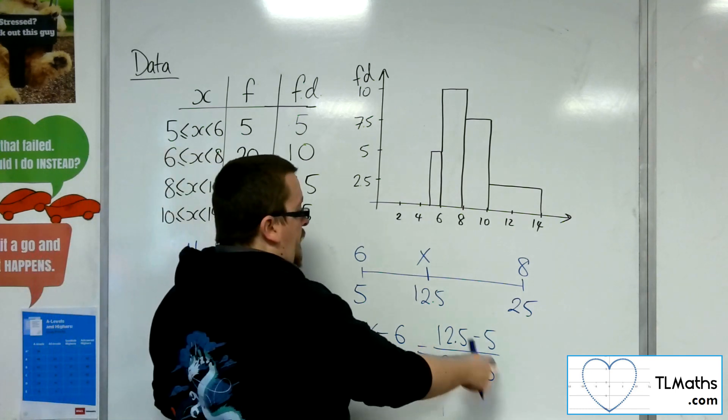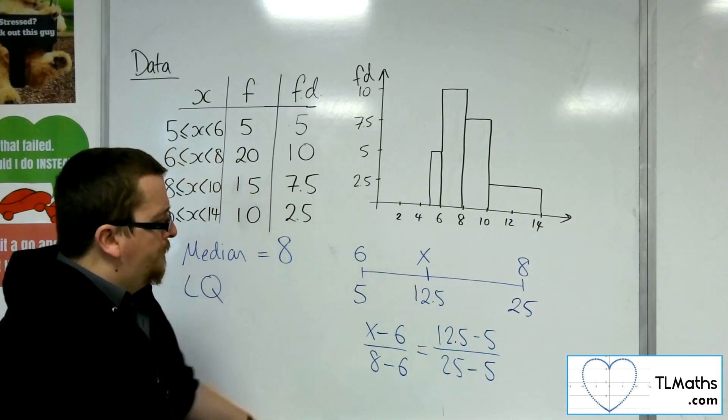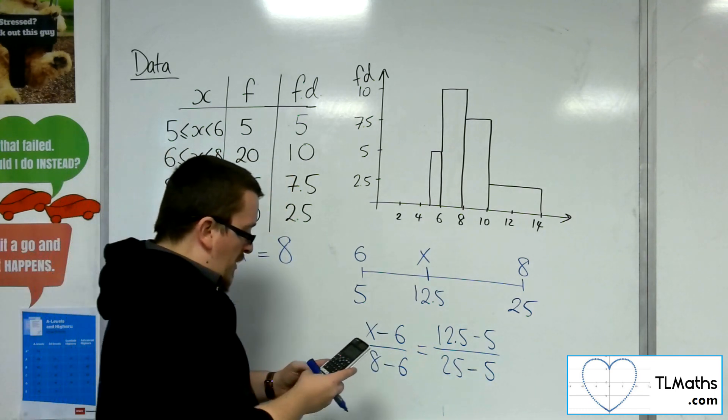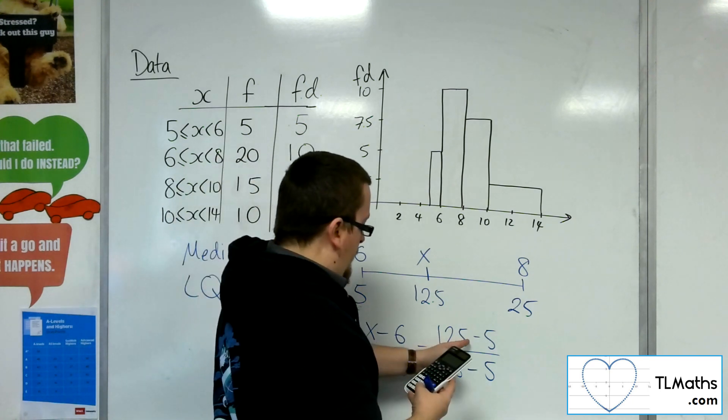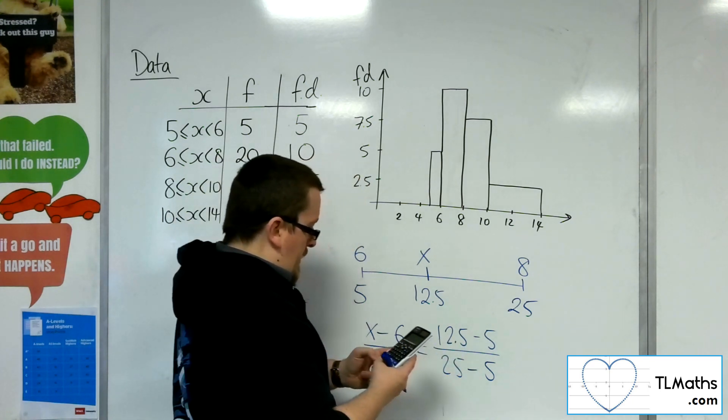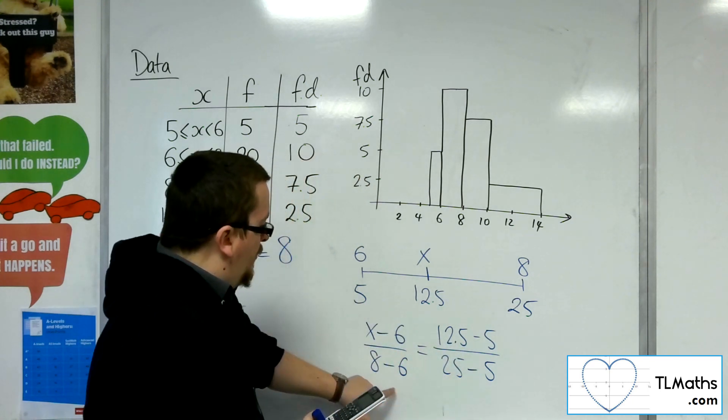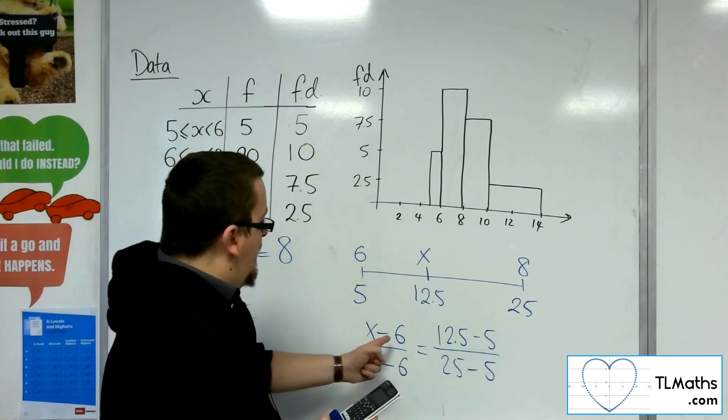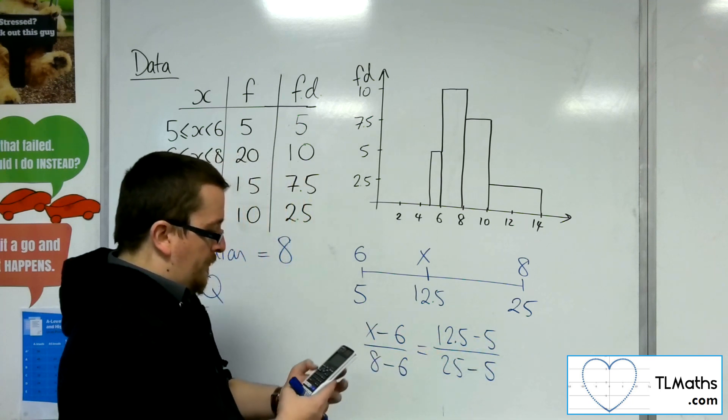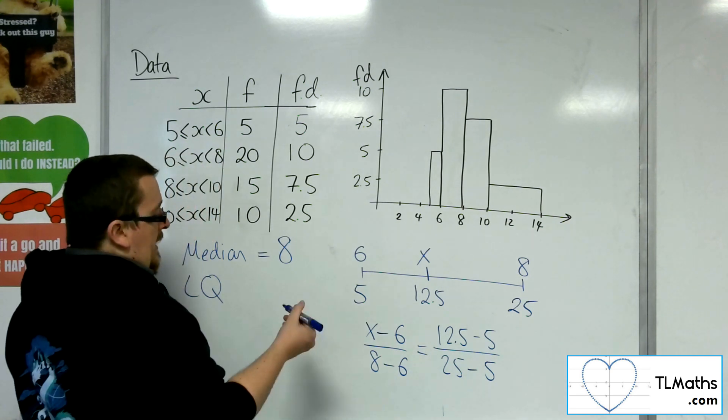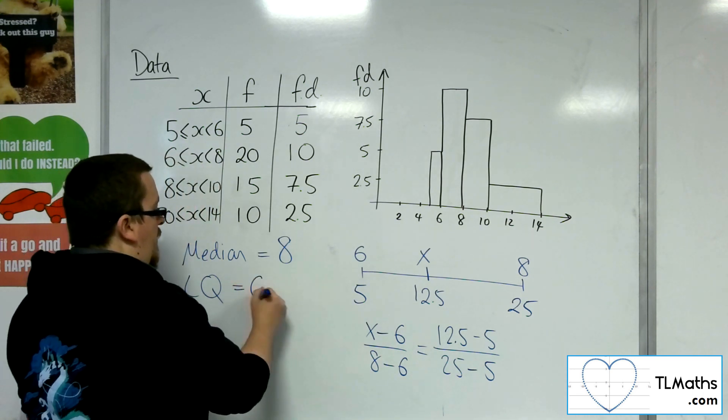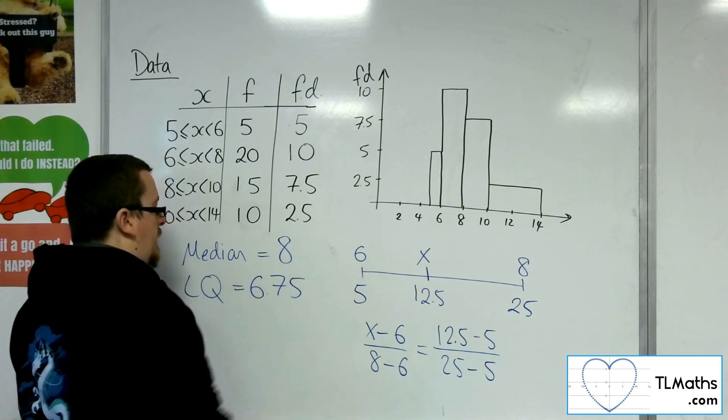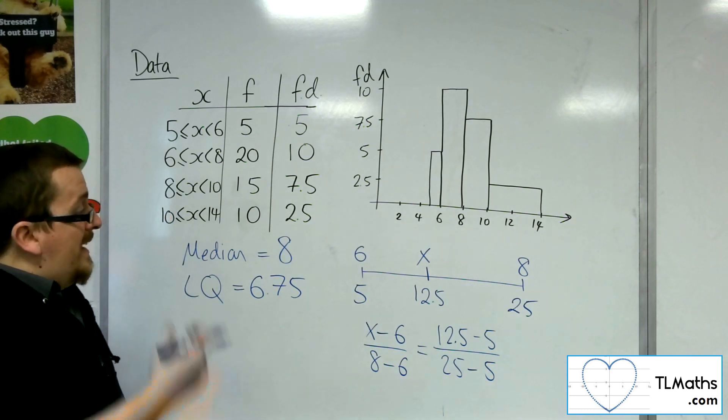So what you can then do is solve that equation. So we do 12.5 take away 5, and divide that by 20. And then we multiply that by 2, so 8 take away 6 is 2, multiply that, and then add on the 6. And what I get is 6.75. And that is my lower quartile.